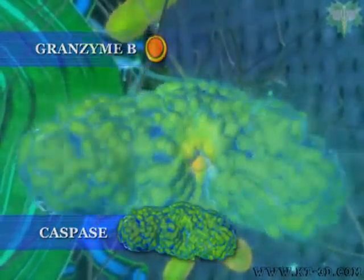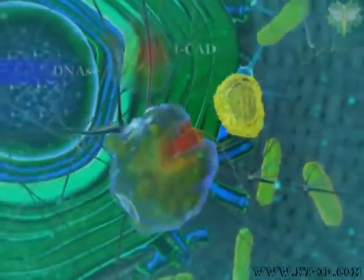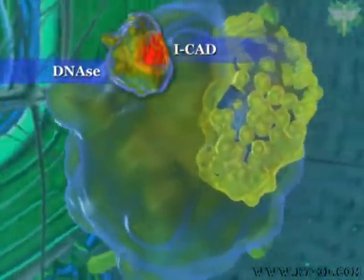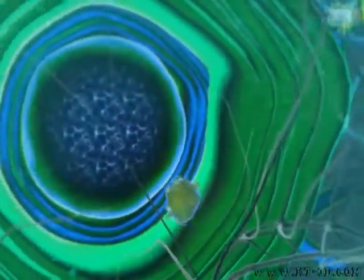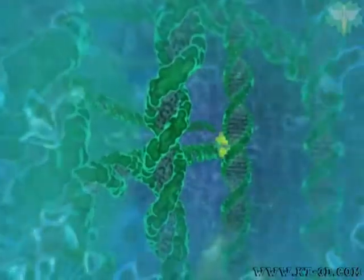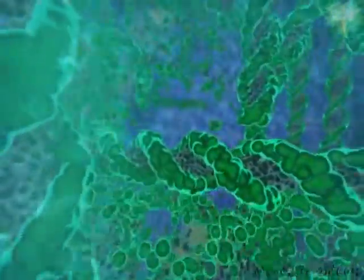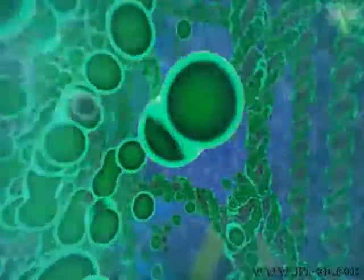In this application, one granzyme — granzyme B — activates a caspase, which then cleaves I-CAD, the inhibitor of caspase-activated DNA ACE. The active DNA ACE, having its inhibitor I-CAD inactivated, is now free to migrate into the nucleus and degrade the DNA.